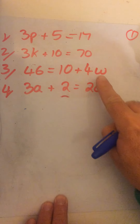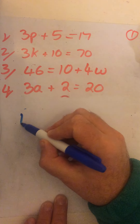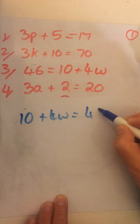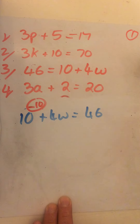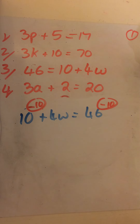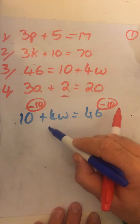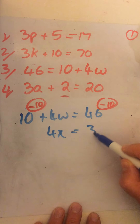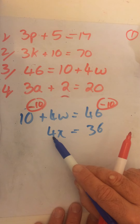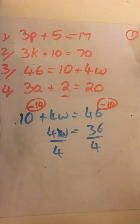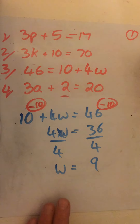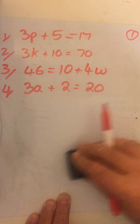The next one — I can see they're the wrong way around, so I'm going to straight away swap it: 10 plus 4w equals 46. I want to get rid of the positive 10, so I'm taking 10 away from both sides. That leaves me with 4w on this side, and 46 take away 10 is 36. I want to get rid of the 4 — 4 times w — so I divide by 4, and the same on the other side. That leaves me with w equals 9.